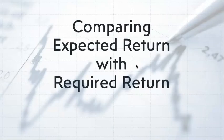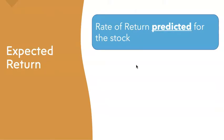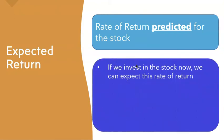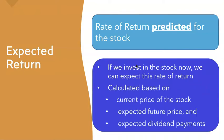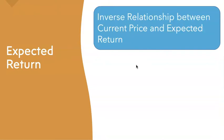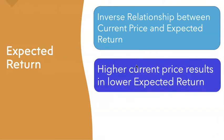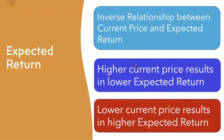Now, comparing the expected return with the required return. The expected return is the rate of return being predicted for the stock — if we invest now, this is the rate we can expect to earn. It's calculated based on the current price, the expected future price, and any expected dividend payments. There is an inverse relationship between the current price and the expected return: a higher current price results in a lower expected return, and vice versa. The general principle is buy low, sell high.